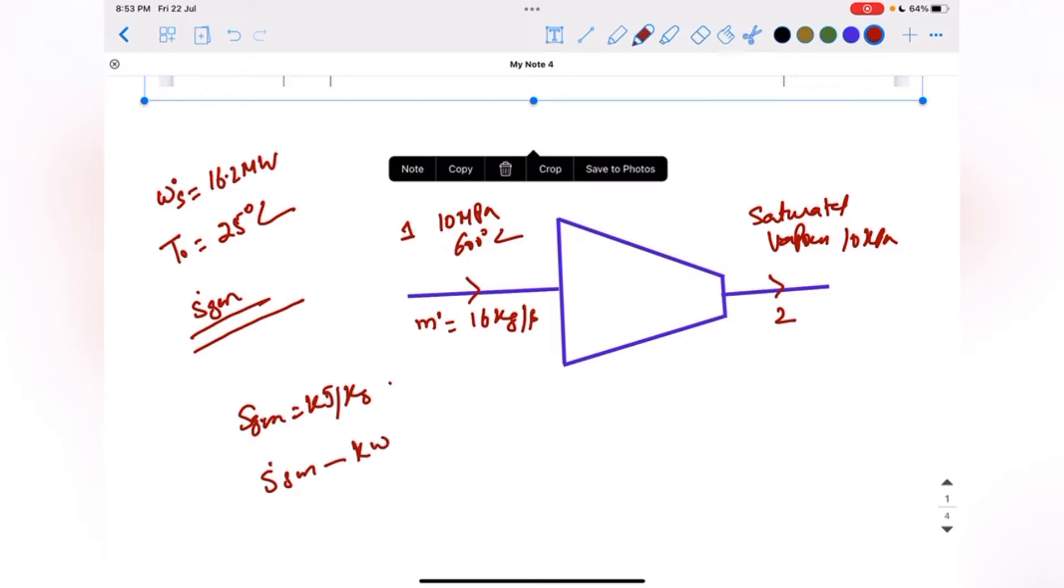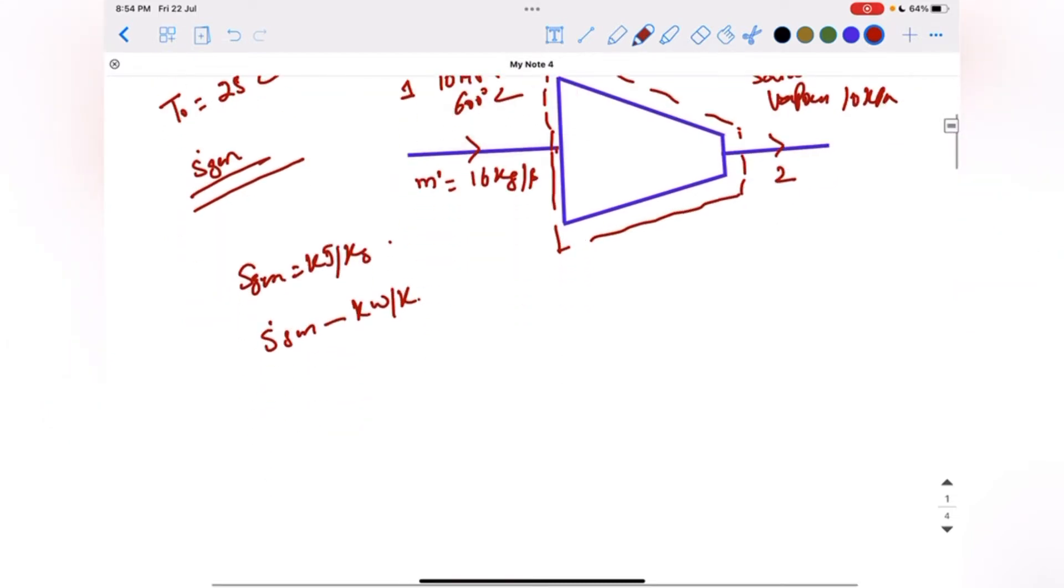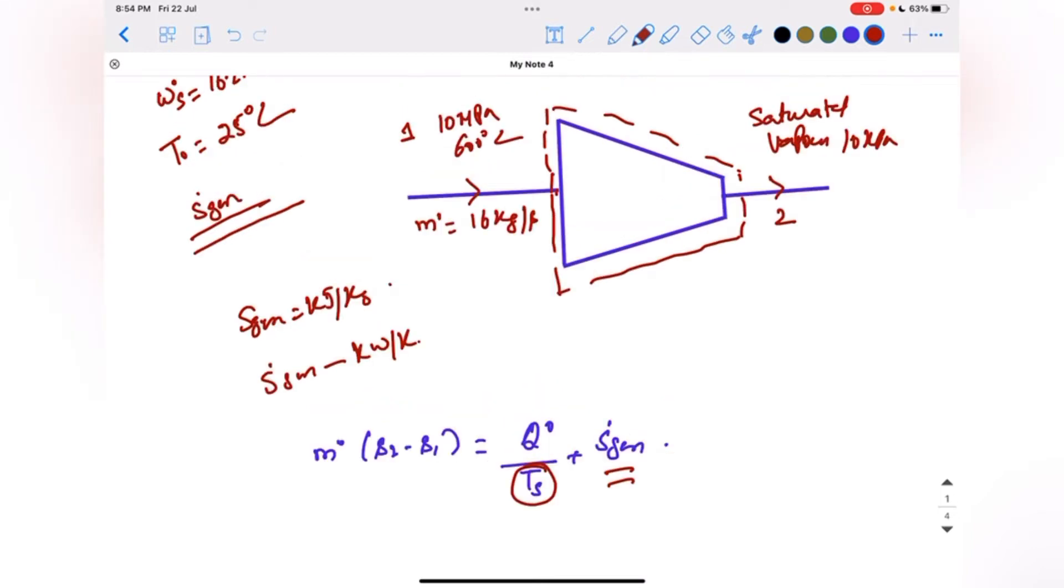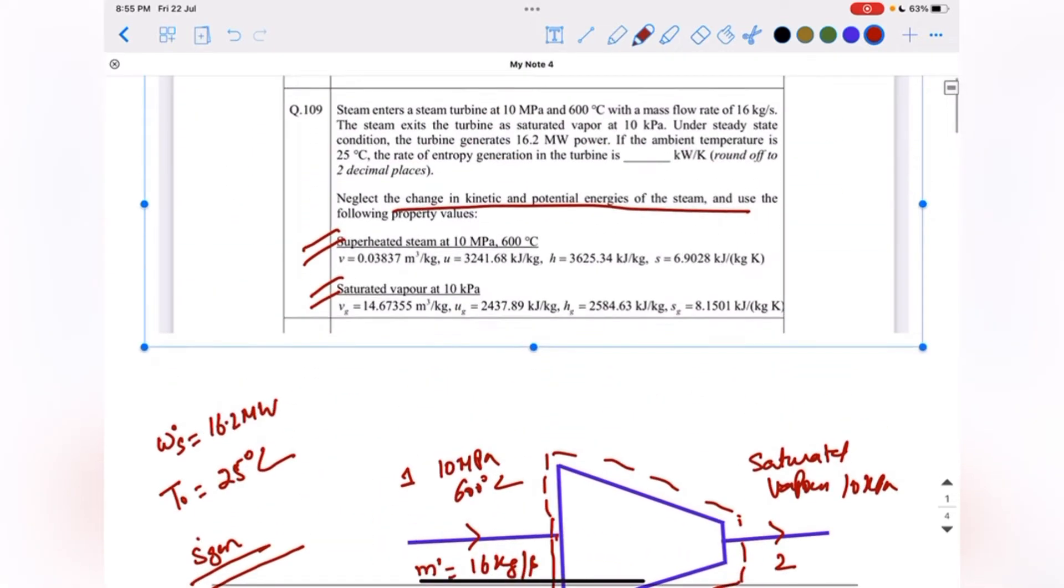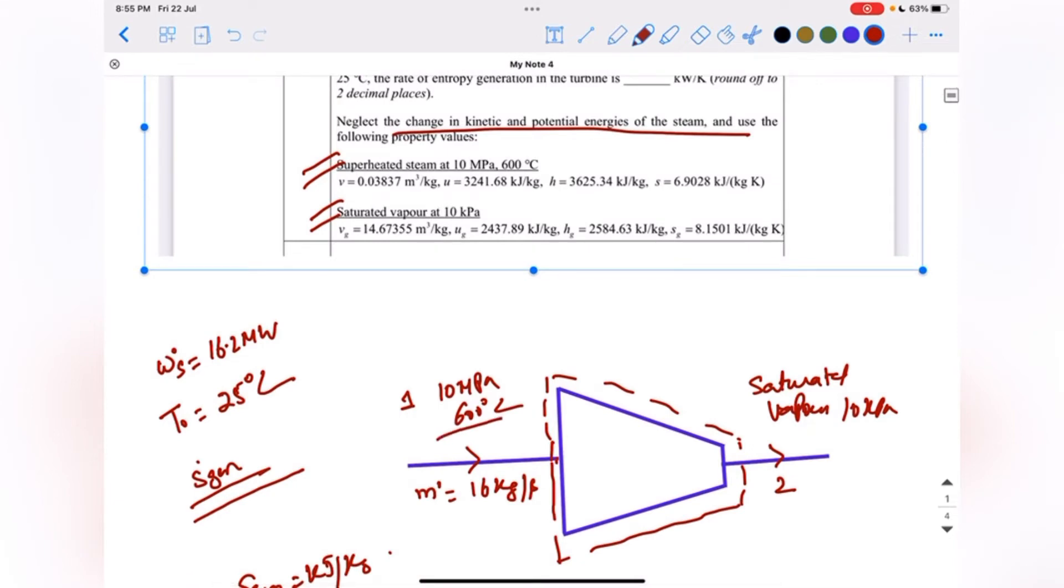Taking the turbine as a control volume, we will apply the entropy balance: m dot times (s2 minus s1) is equal to q dot by ts plus s dot generation. We have to find s dot generation. The surrounding temperature, in this case the ambient temperature and the immediate surrounding temperature of the turbine, is the same, so ts in this case is t naught. Now we have to find q dot.